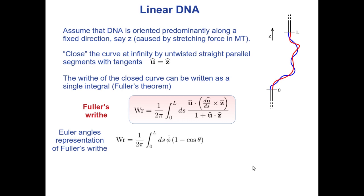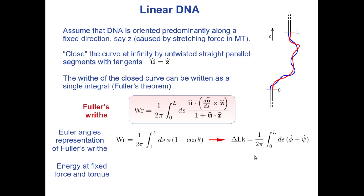From the Euler angle representation of the Fuller writhe, I can also find an expression for the linking number. Because I know that writhe plus twist equals the linking number, and I know how to express the twist in terms of Euler angles, I get the excess linking number. This is a very simple expression in terms of Euler angles: it is the integral of phi-dot plus psi-dot. So this is how the linking number looks in this representation.